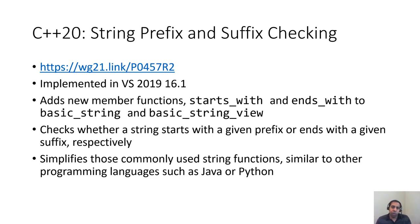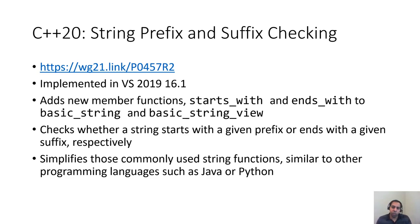Another feature I'd like to talk about is `starts_with` and `ends_with` for strings and string views. As the names suggest, they are self-explanatory: they check whether a string starts with or ends with a given string, returning a boolean. They work for both `basic_string` and `string_view`. Similar to `contains`, these are functions that make writing C++ a lot easier, and I hope to see more string helpers in the future.